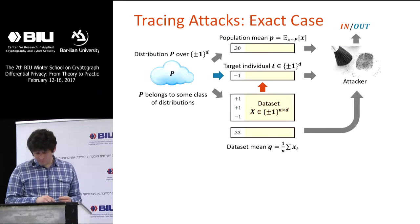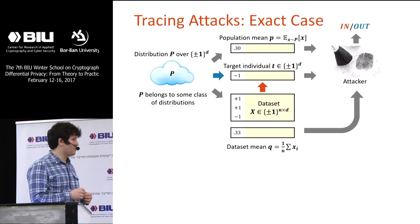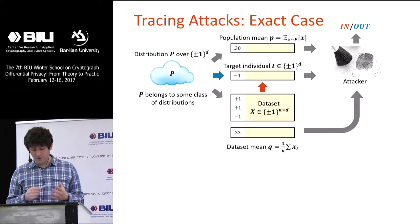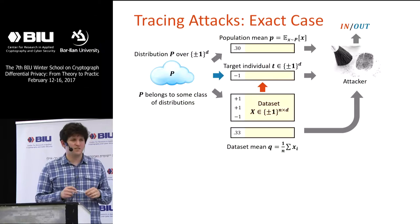I'm going to focus for a while on exact statistics — not talking about noise or how much noise is needed to achieve differential privacy. Simplifying the model: the attacker gets the exact mean of the dataset. In this model, I claim that membership inference is possible as long as the dimension d is big enough.